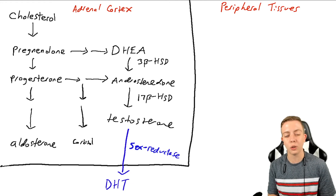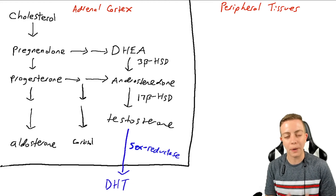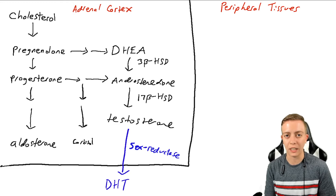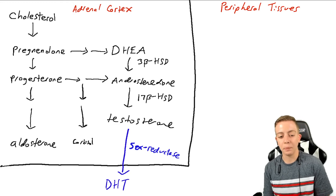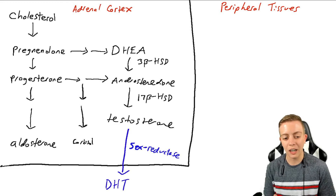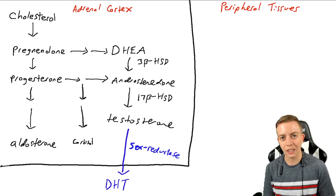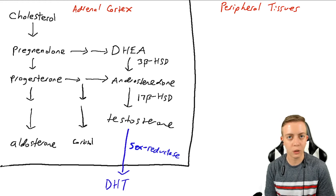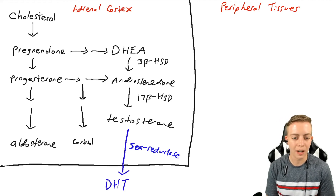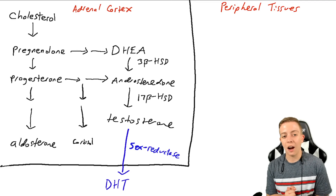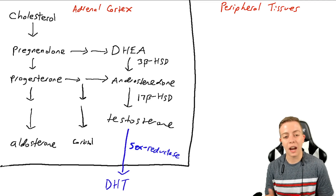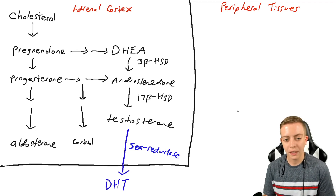This conversion via 5-alpha reductase will also happen elsewhere in the body. I am just noting it here — it is not important to the estrogen pathway — but so you know, we do get DHT out of this pathway. Androstenedione is going to be our primary precursor to estrogens in production from the adrenal cortex.